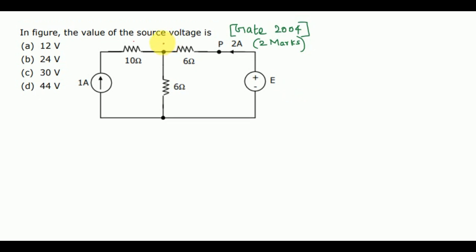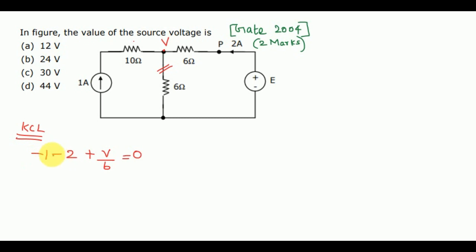Let us consider the node voltage here as V. Applying Kirchhoff's current law at this node: since this 1 ampere current is entering towards the node, it is minus 1. This 2 ampere current is also entering towards the node, so it is minus 2. For this branch, the current value is plus V / 6 equal to 0. So minus 3 plus V / 6 = 0, giving V / 6 = 3, and therefore V = 18 volts.